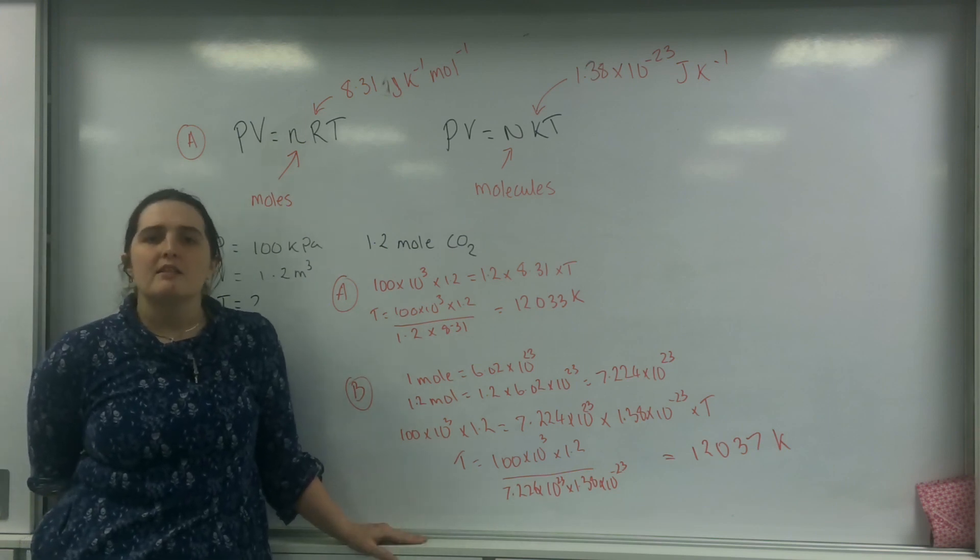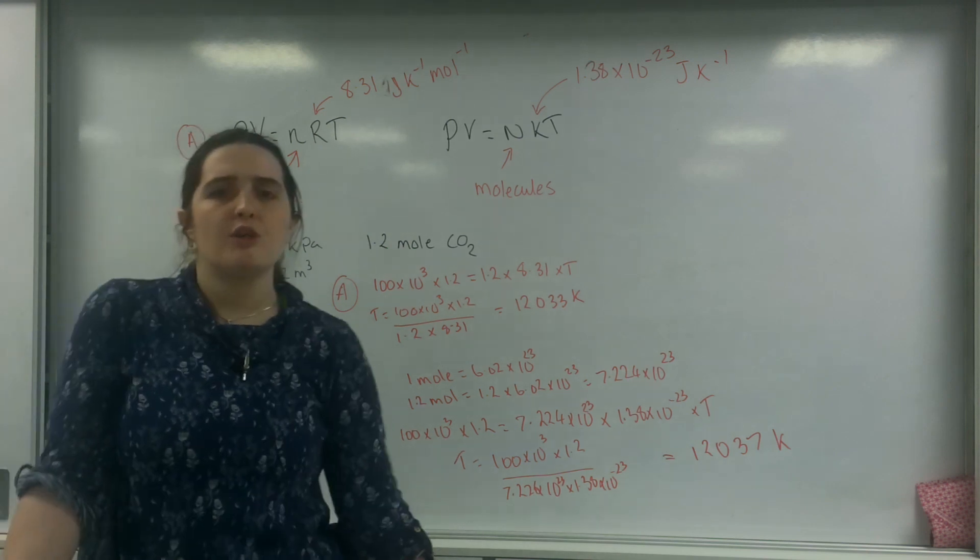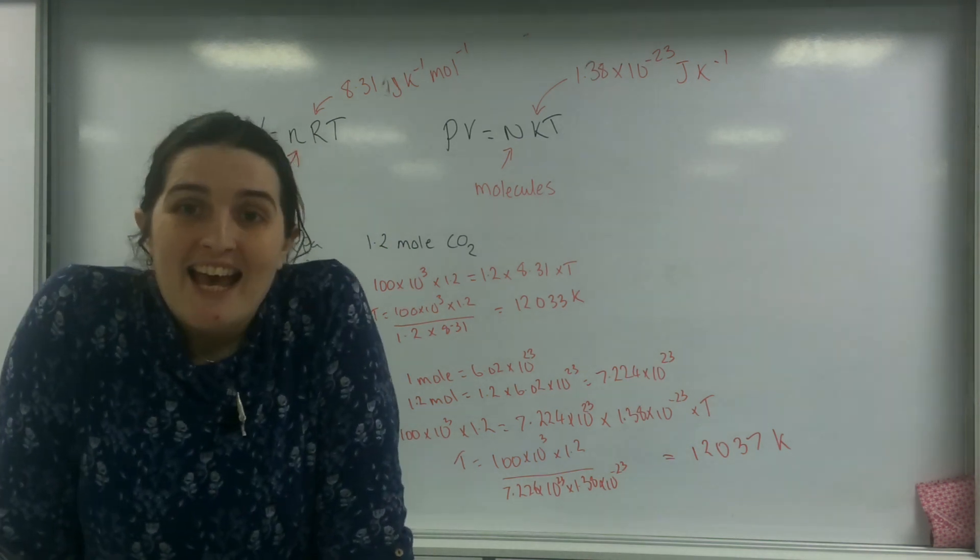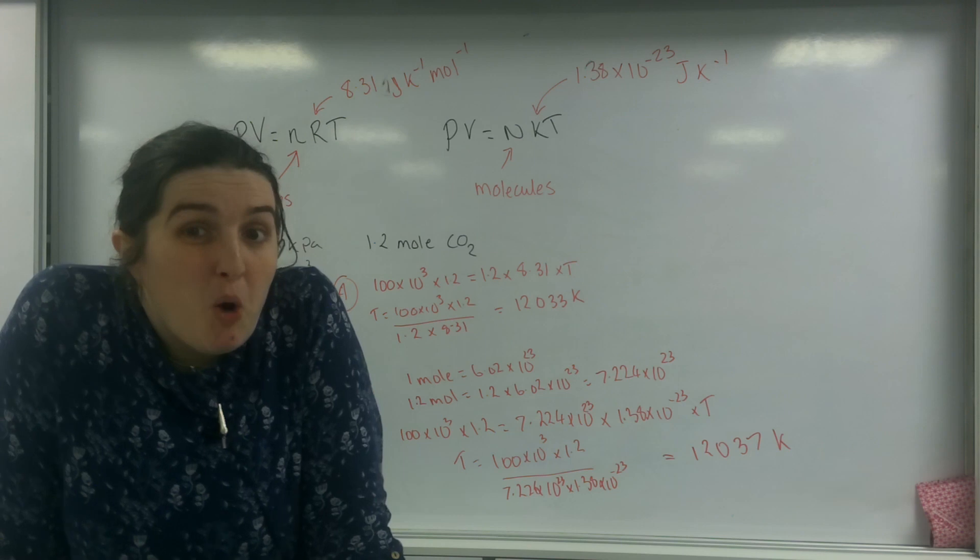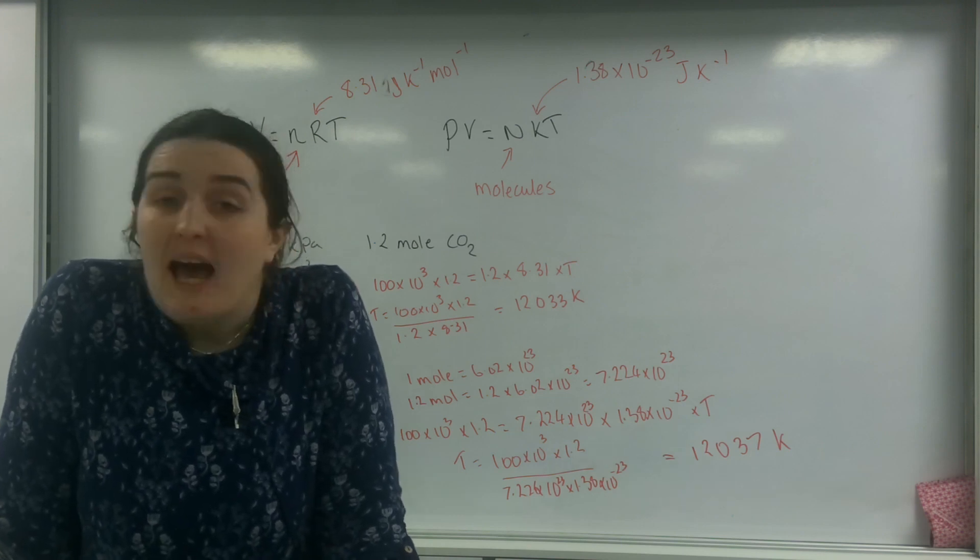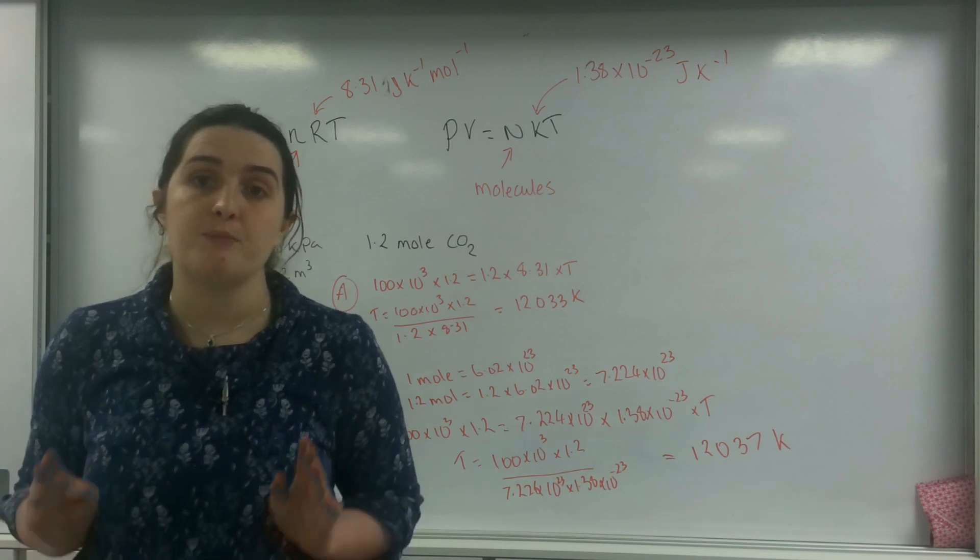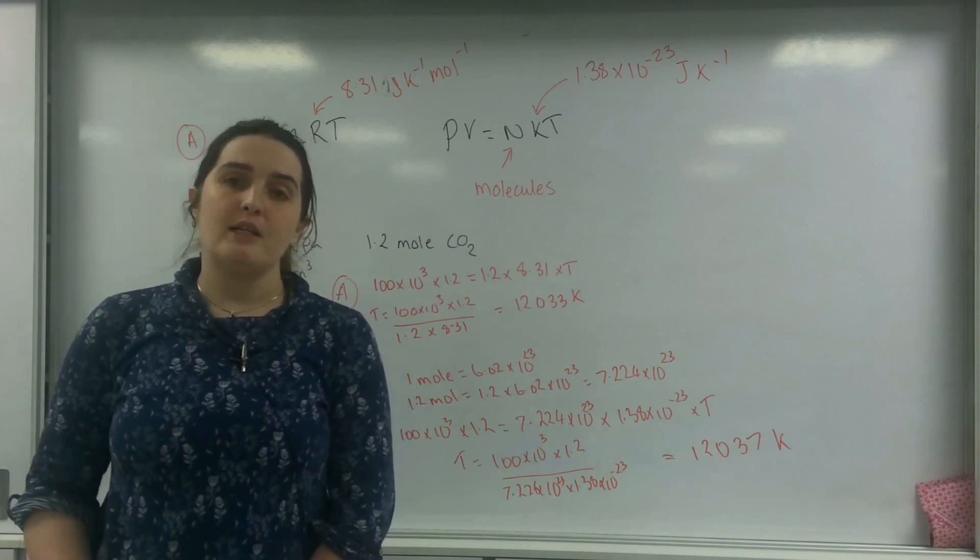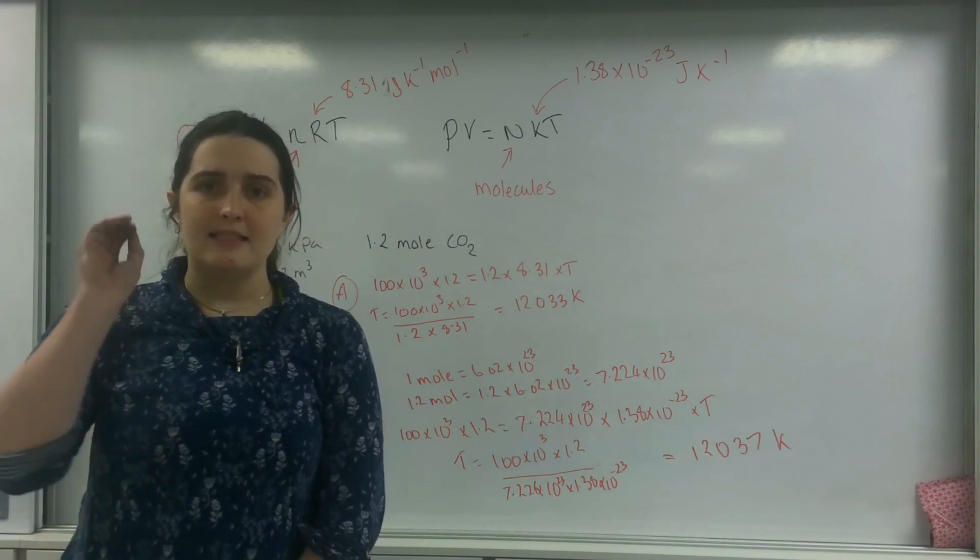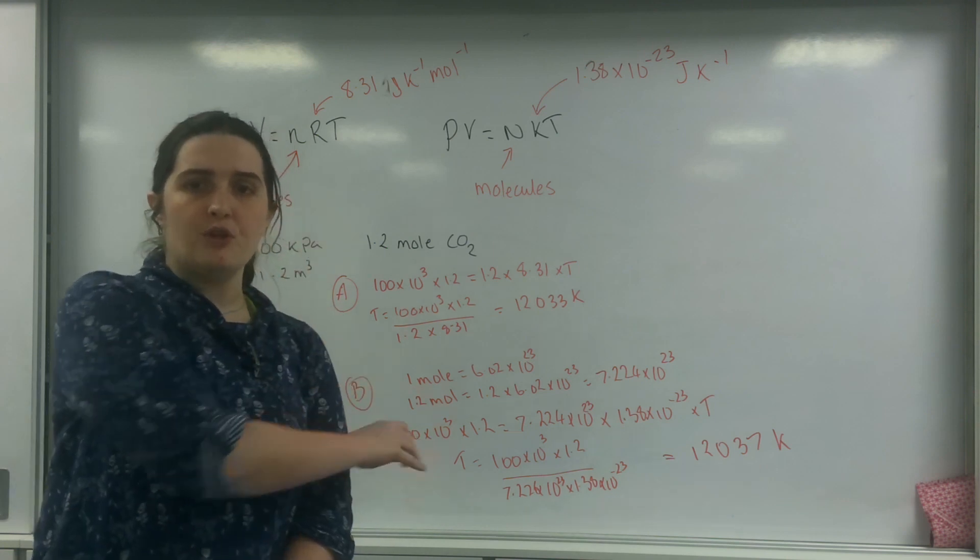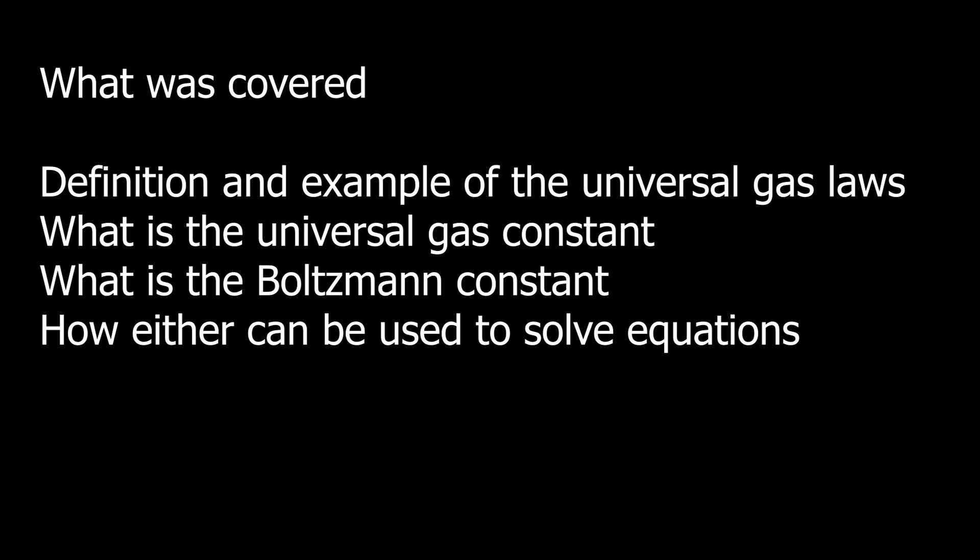Both ways are valid. So chemists, if you really want to, you can convert all of your number of molecules into PV equals NRT. You can use moles the whole time if you want, and then at the end convert into molecules if you want. So whatever you feel more comfortable with. But both values work. So that there is the universal gas law and how to use it. Thank you.